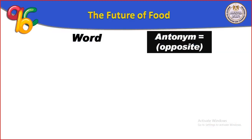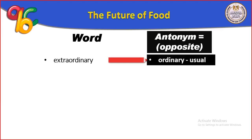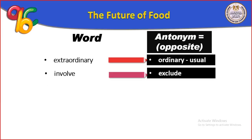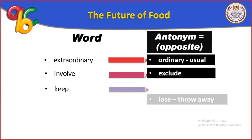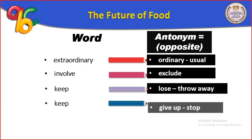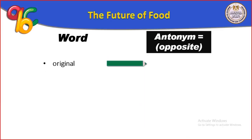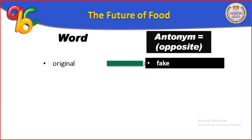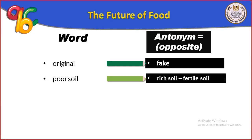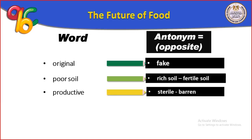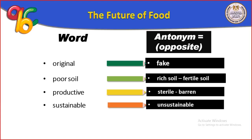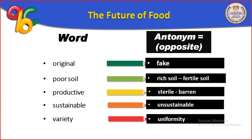Now we have antonyms or opposites. Extraordinary — opposite: ordinary or usual. Involve — opposite: exclude. Keep — antonym: lose or throw away; or give up or stop; or disobey or break. Original — opposite: fake (مزيف). Poor soil — opposite: rich soil or fertile soil. Productive — opposite: sterile or barren (الأرض جدباء). Sustainable — opposite: unsustainable. Variety — opposite: uniformity (توحد).